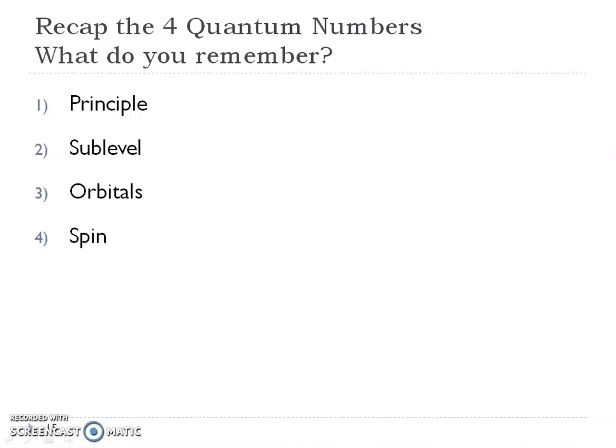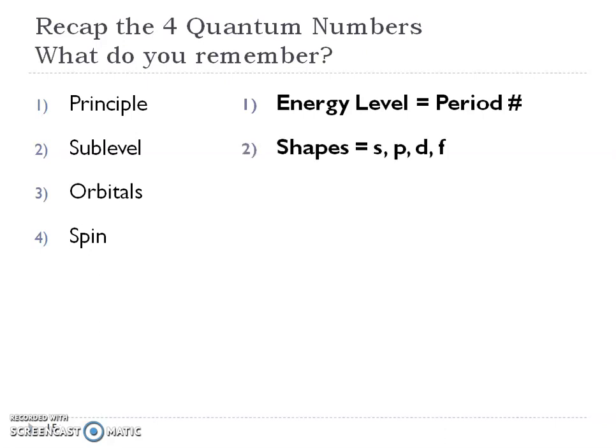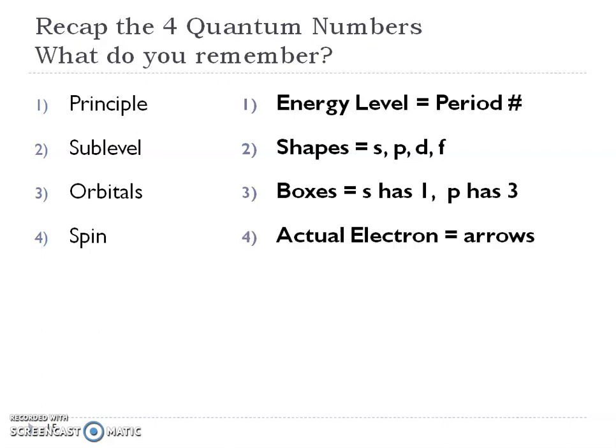Let's recap the four quantum numbers. Maybe pause and come up with a definition for each: the principal quantum number, the sublevel, the orbitals, and the spin. The principal quantum number is the energy level, and for the most part, your energy level equals the period number — though it gets more complicated with the D and F sub-levels. The sublevel refers to the shapes: S, P, D, and F. Orbitals are those boxes — S has one orbital, P has three. The spins represent electrons as arrows up or down.